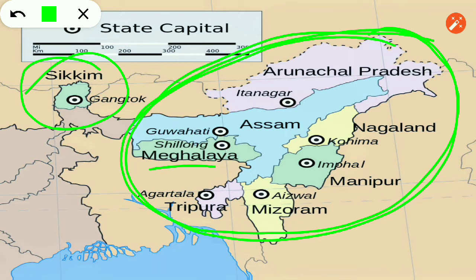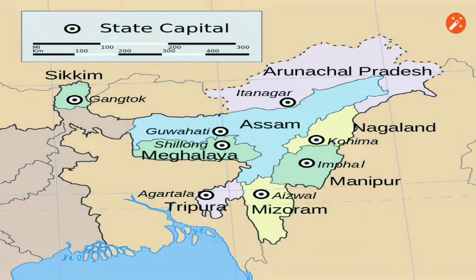The seven sisters are: first is Meghalaya, Assam, Arunachal Pradesh, Nagaland, Manipur, Mizoram, and Tripura.